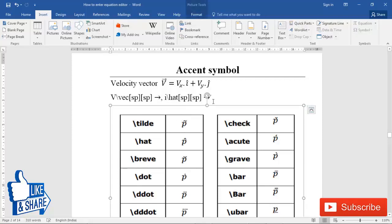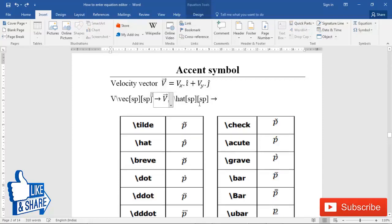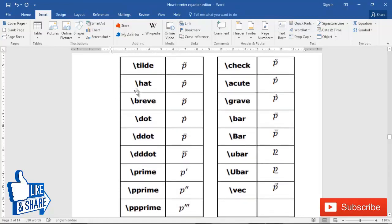For a hat symbol, type the letter i, then type 'hat' and press space twice. This document shows a list of all the shortcuts for different kinds of accents.